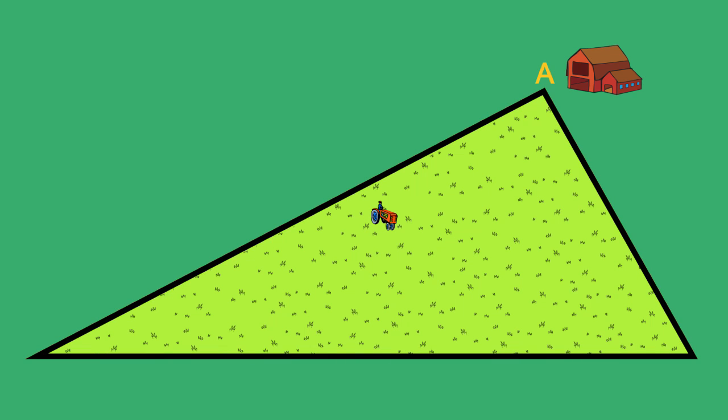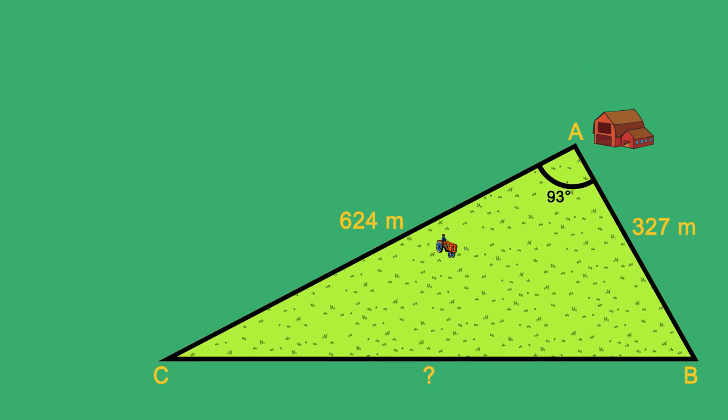From vertex A it is 327 meters to vertex B and 624 meters to vertex C. The angle between the lines of sight to the vertices B and C is 93 degrees. Calculate how much fencing is needed to enclose the entire field.